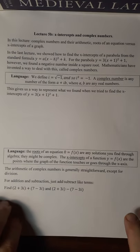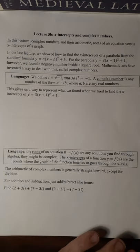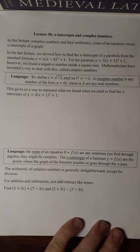So here we are with lecture 5b, x-intercepts and complex numbers. So what's a complex number? What's the arithmetic? And what's it mean to be a root versus being an x-intercept?